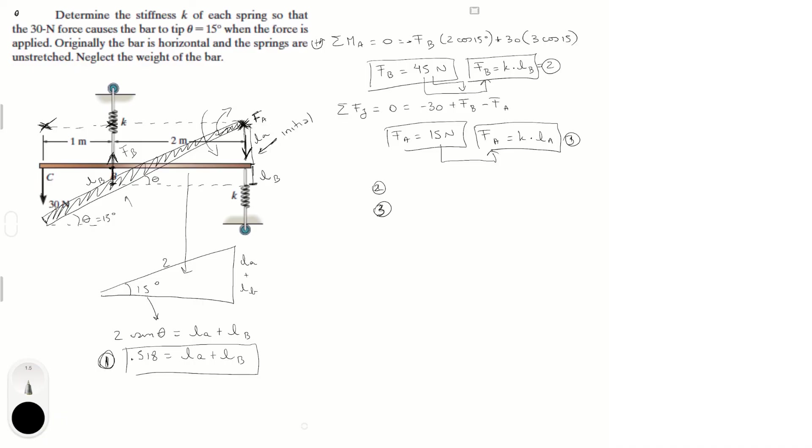Equation 2 can be rewritten as LB is equal to 45 over K. And, equation 3 can be rewritten as LA is equal to 15 over K.